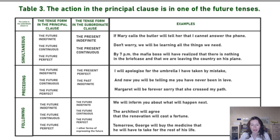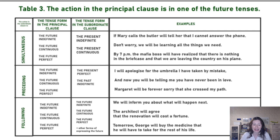For instance: 'I will apologize for the umbrella I have taken by mistake.' The action of having taken the umbrella happened a little earlier before you will apologize.